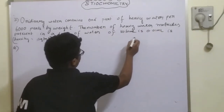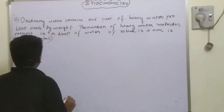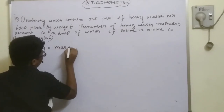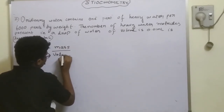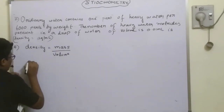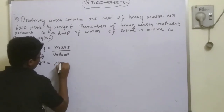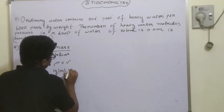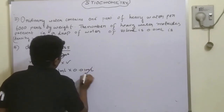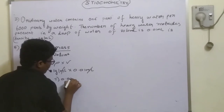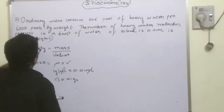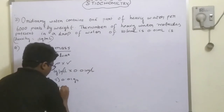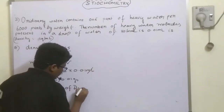Using the formula: density equals mass divided by volume, mass equals density (rho) times volume. Rho is given as 1 gram per milliliter, volume is 0.01 milliliter, so mass equals 0.01 grams. Ordinary water contains 1 part of heavy water per 6000 parts — meaning 1 gram of heavy water (D2O, deuterium oxide) per 6000 grams of ordinary water (H2O).